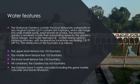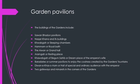Now we will talk about the water features. The Shalimar Garden contains the most elaborate waterworks of any Mughal garden. It contains 410 fountains which discharge into wide marble pools, each known as a hauz. The enclosed garden is rendered cooler than surrounding areas by its dense foliage and water features, providing relief during Lahore's blistering summers with temperatures sometimes exceeding 120 degrees Fahrenheit (49 degrees Celsius). The distribution of fountains is: the upper level terrace has 105 fountains, the middle level terrace has 152 fountains, the lower level terrace has 153 fountains. The garden also has five water cascades, including the great marble cascade and Sawan Bhadon.